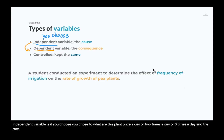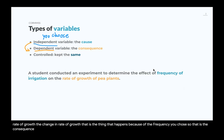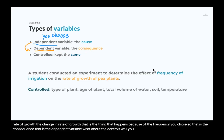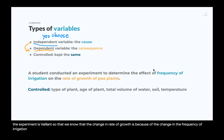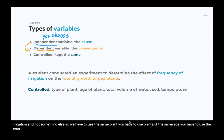The rate of growth — the change in rate of growth — is the thing that happens because of the frequency you chose, so that is the consequence, the dependent variable. For the controls, you have to keep everything else the same so the experiment is valid, so we know that the change in growth rate is due to the irrigation frequency. You have to use plants of the same age and keep the total volume of water the same.